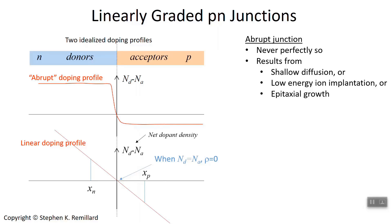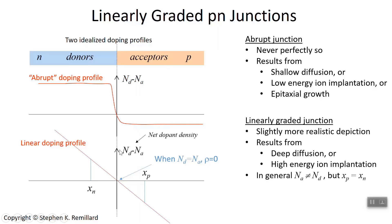In the linearly graded case, you have a more gradual drop-off. What's graphed on the vertical axis is the difference between the donor density and the acceptor density — the net dopant density. On the left side of the abrupt junction, it's all donors, and on the right side all acceptors. So donors minus acceptors is positive on the left and negative on the right. In the linearly graded junction, that net doping density is a straight line, and the slope is gradual.